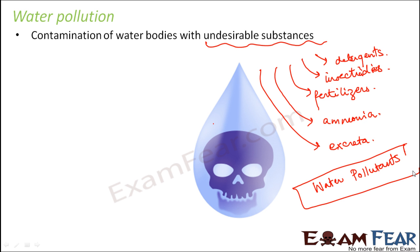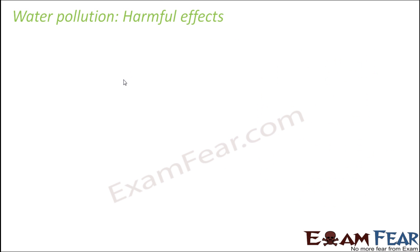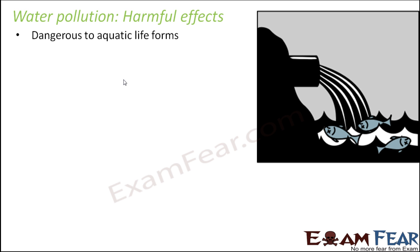Water bodies include lakes, rivers, oceans, and ponds. Water pollution has severe harmful effects. The first threat is to aquatic life forms — in each water body there is a huge diversity of life, with large numbers of plants and animals living in the water. If the water gets polluted, fishes, dolphins, crabs, and other aquatic animals which completely depend on water for survival will all die.